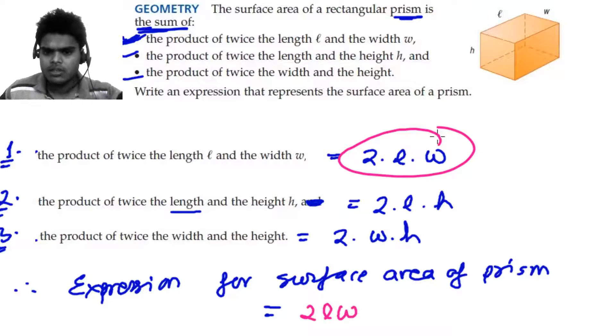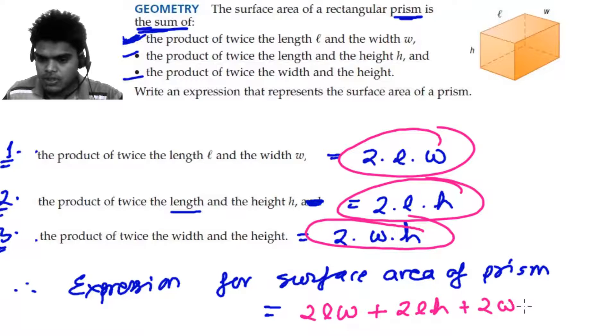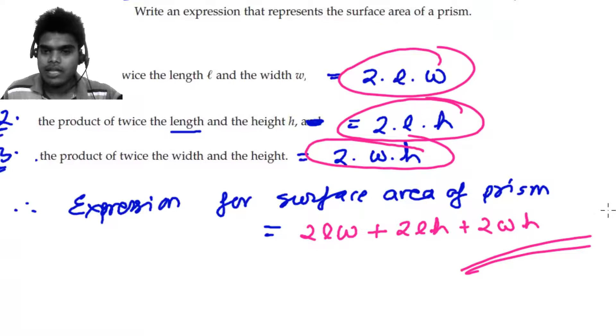2LW. This dot you can remove. And then plus this one, 2LH, and then this one, 2WH. Here L represents the length, W represents the width, and H represents the height. So this is the algebraic expression for the surface area of the prism.